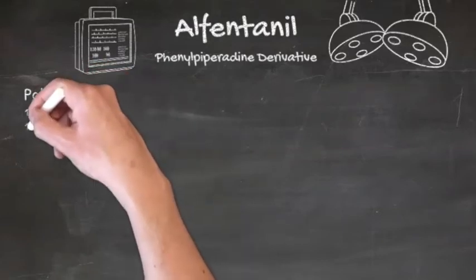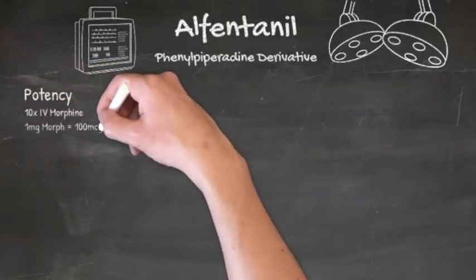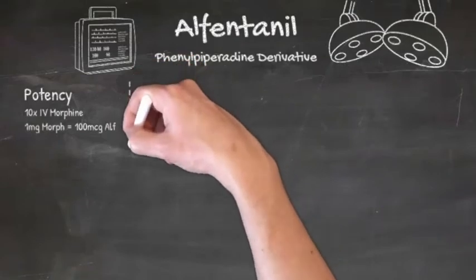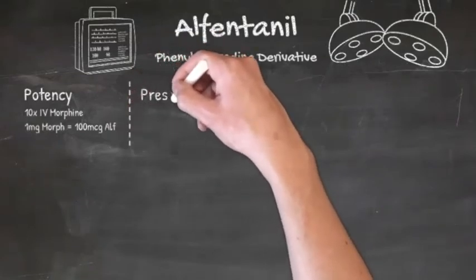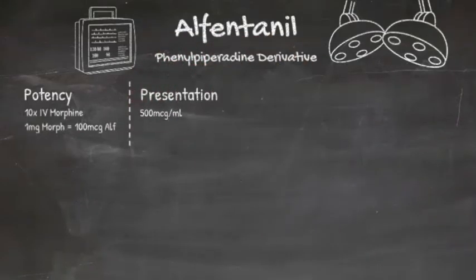However, it's 10 times less potent than fentanyl, which means 1 mg of morphine would equate to about 100 mcg of alfentanyl. In the anaesthetic room, you'll generally find it's presented in 2 ml vials at 500 mcg per ml.